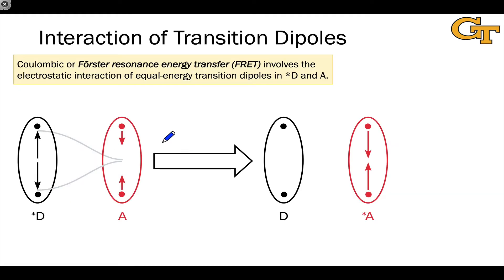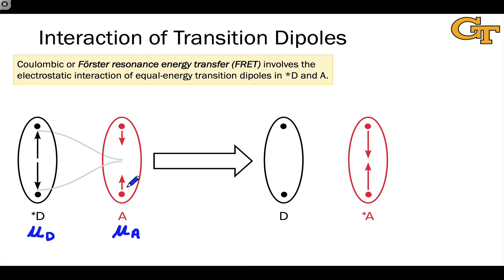The core concept behind FRET is the idea that photoexcitation induces an oscillating dipole in the excited molecule. This is associated with the transition dipole moment for the energy donor. A molecule in the vicinity can feel the oscillating electric field associated with D-star's oscillating dipole, and this can induce a dipole moment in the energy acceptor. This reminds me of dipole-induced dipole interactions from intermolecular forces. It's a very similar idea, except that the dipole is now oscillating because of the photoexcitation. In hearing the term oscillating electric field, you may get the impression that D-star emits a photon — it doesn't.